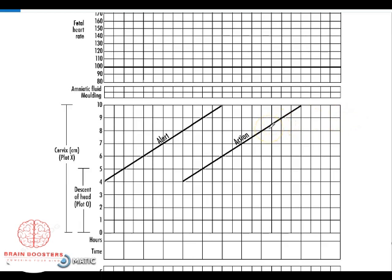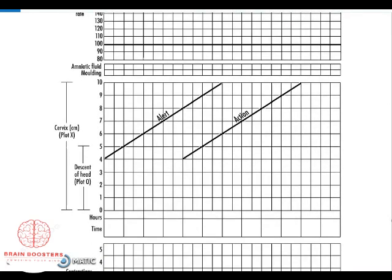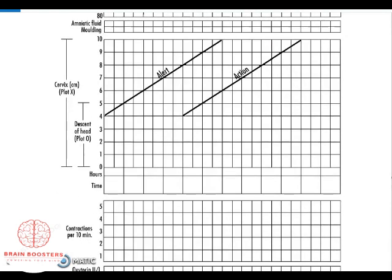The action line means you need to take action — labor is prolonged. When you open the partograph, your graph must not reach or go beyond the action line, because that tells you labor has prolonged and intervention is required. Your graph may go above or below the alert line, but it should not cross the action line. That's why this tool is very important — it shows you exactly when you need to act because the woman or the fetus is in danger.